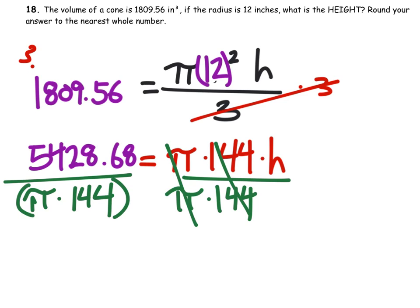On some of your calculators, you're going to want to put that in parentheses, just so it knows. Otherwise you'll divide by π and then divide again by 144.